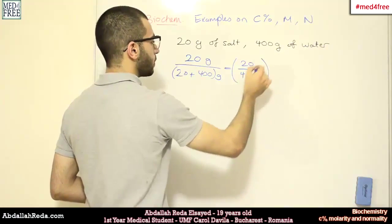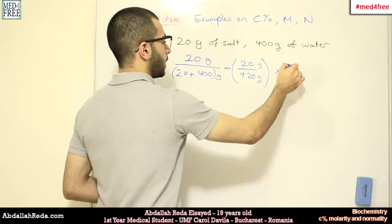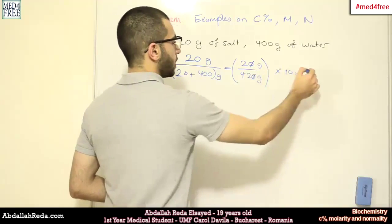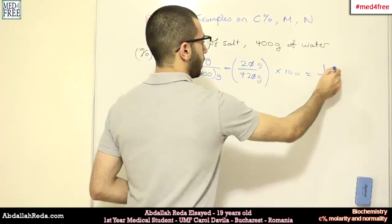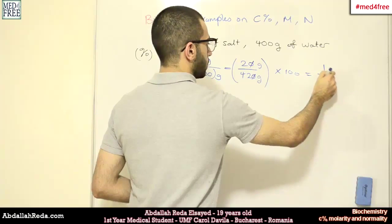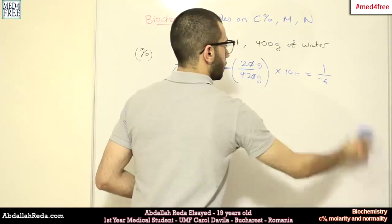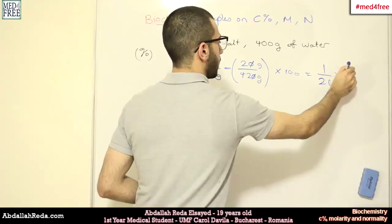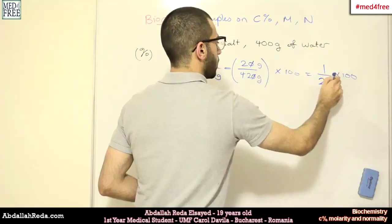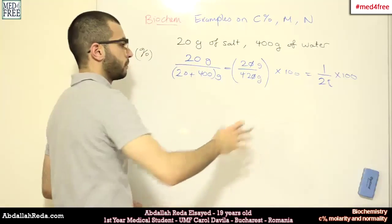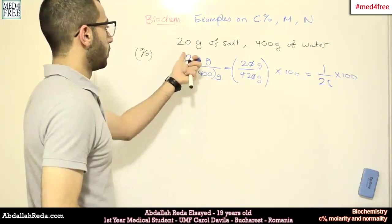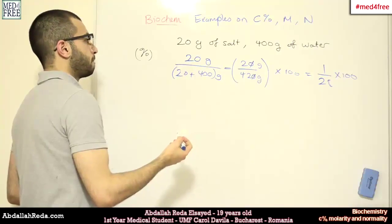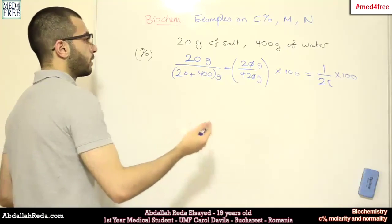And we have to multiply this by 100. So we will get 1 over 21 multiplied by 100. This is the ratio for the salt and the whole solution.